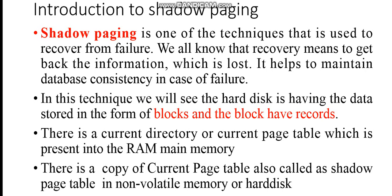In this shadow paging technique, the hard disk stores data in the form of blocks, and the blocks have records. There is a current directory or current page table present in the RAM or main memory. There is also a copy of the current page table, known as the shadow page table, in non-volatile memory or hard disk.